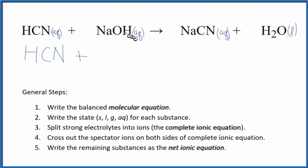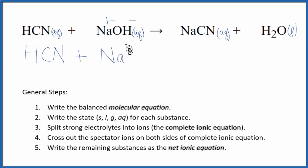Sodium hydroxide, though — that's a strong base. It's a strong electrolyte, so it'll split apart. Sodium on the periodic table is in group 1, so that'll be a 1+. The hydroxide ion has a 1- ionic charge. So we'll have Na+ plus OH-. Those are the reactants in our complete ionic equation.